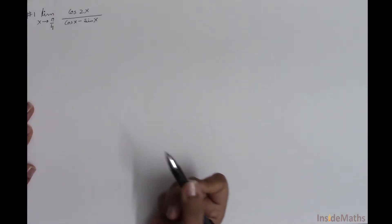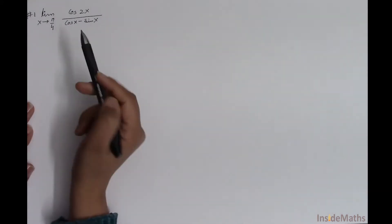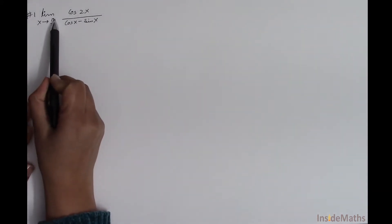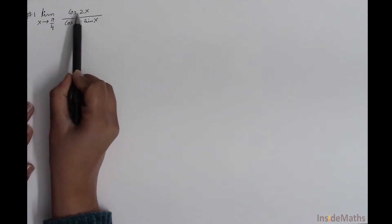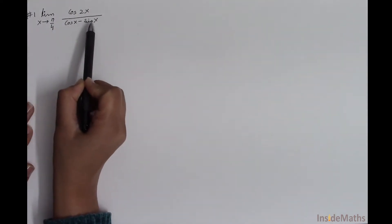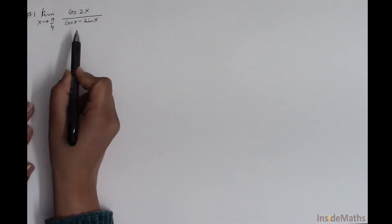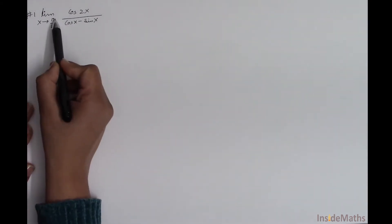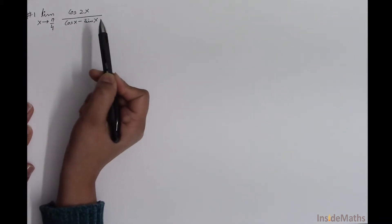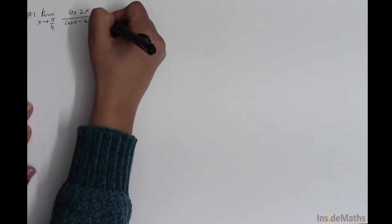In this video I'll be doing some more examples of limits. The first example is the limit as x approaches π/4 of cos(2x) divided by (cos x minus sin x). The first rule to solve any limit is to plug this value into the function and check if it's defined or not.